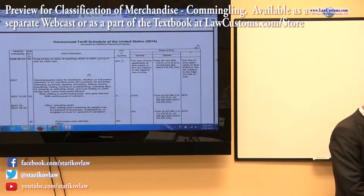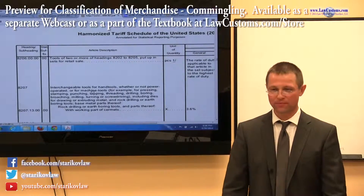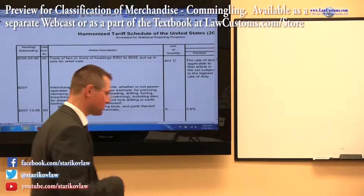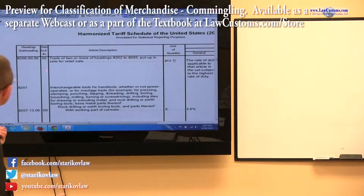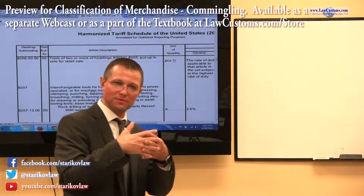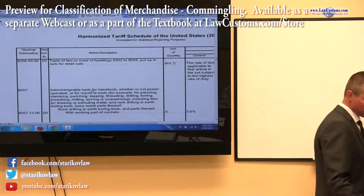HTS heading 8206.00 — look at the heading terms. Tools. Remember, we talked about circular saw blades as being tools in heading 8203. So 8206 says tools of two or more headings that are put up in sets for retail sale. So you have commingled merchandise — it must be in sets for retail sale.